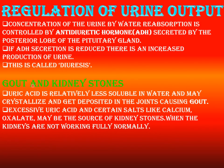Some disorders include gout and kidney stones. Uric acid is less soluble in water, so it crystallizes and gets deposited in the joints of the body, causing severe pain and swelling — this is called gout. Excess uric acid and certain salts like calcium oxalate may be the source of kidney stones when the kidneys are not working normally.